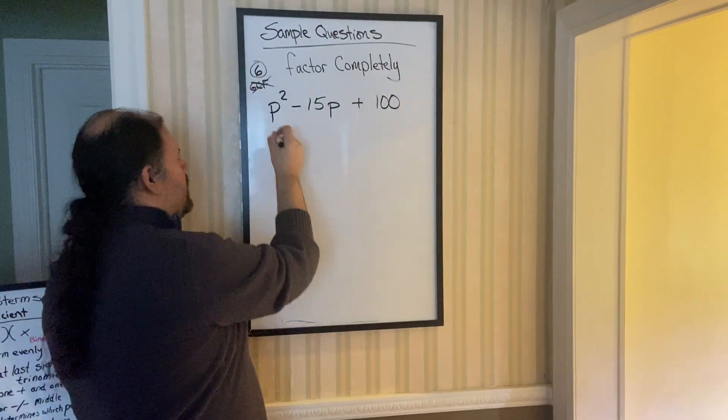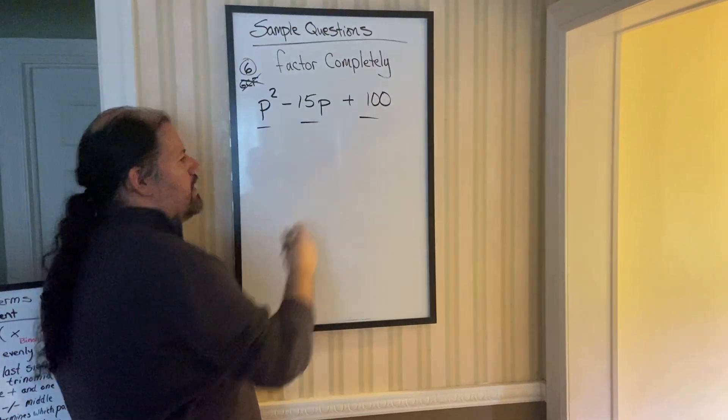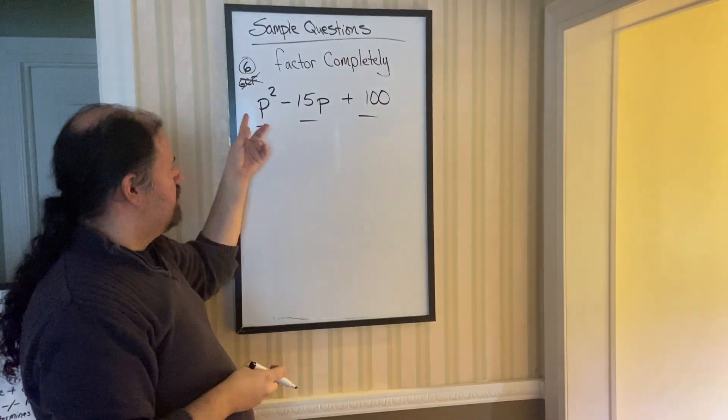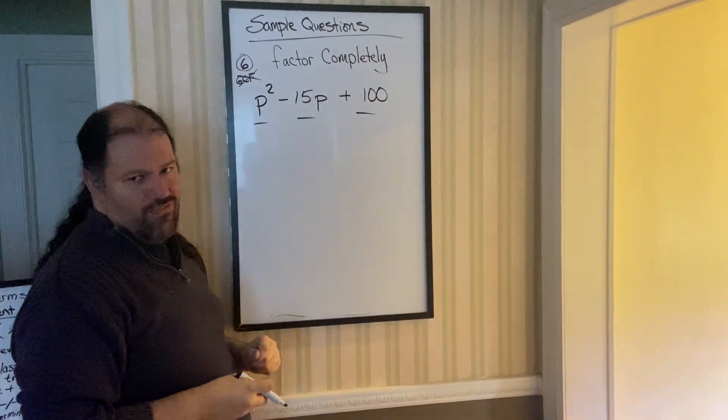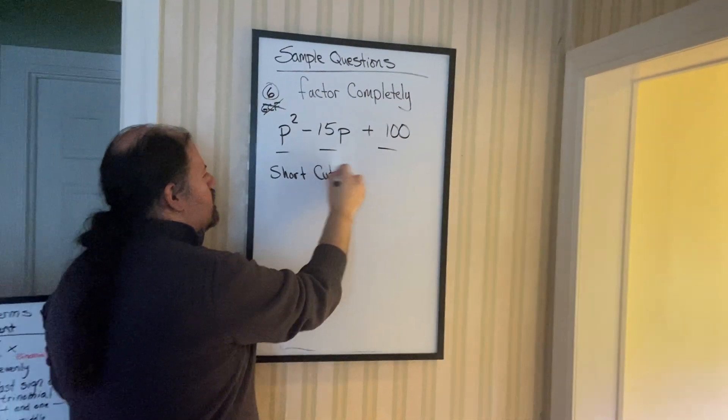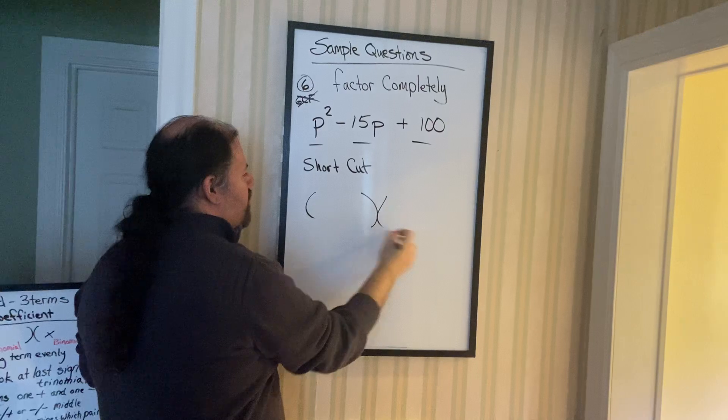Next, count the number of terms. One, two, three. You know three terms with no leading coefficient, no number in front. Shortcut. So let's try a shortcut, and if you forgot a shortcut, two sets of parentheses is your setup. Step one.